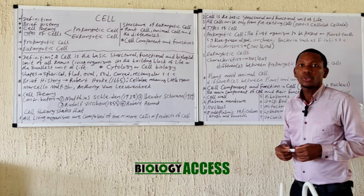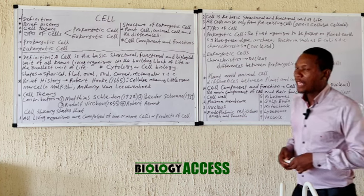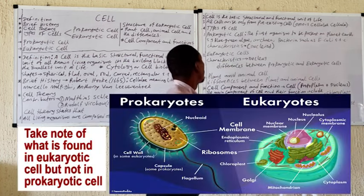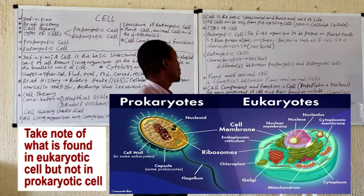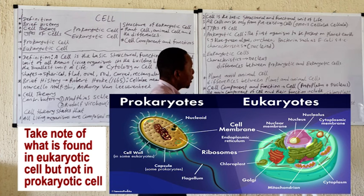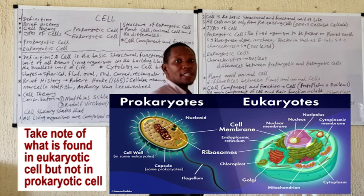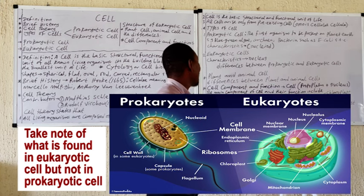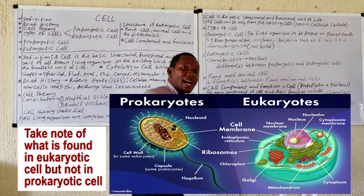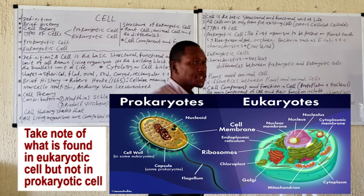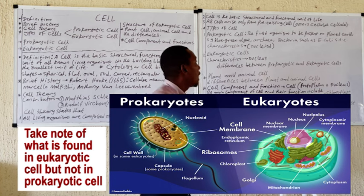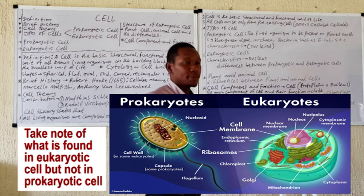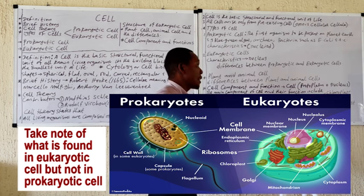Let's look at the types of cell. There are two basic types: the prokaryotic cell and the eukaryotic cell. The prokaryotic cell is considered the first group of cells or organisms found on Earth, and they include all blue-green algae, archaea or archaebacteria, and bacteria such as E. coli.